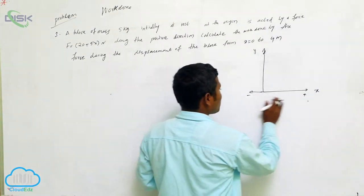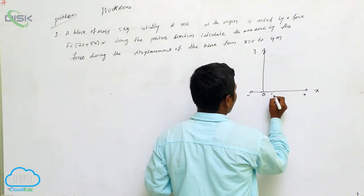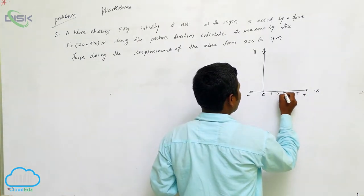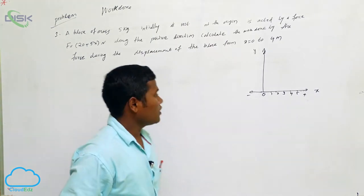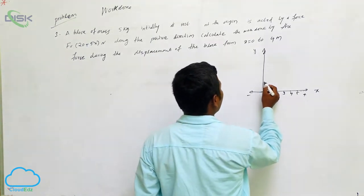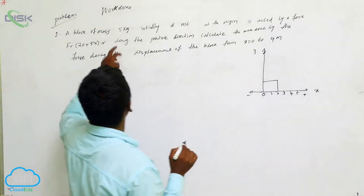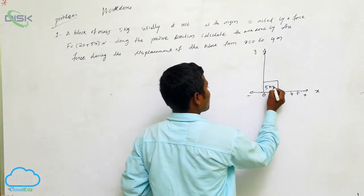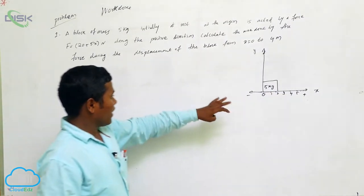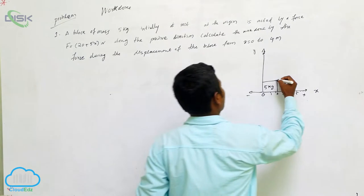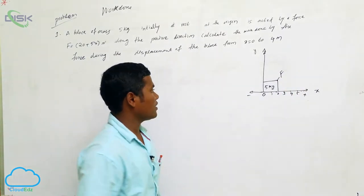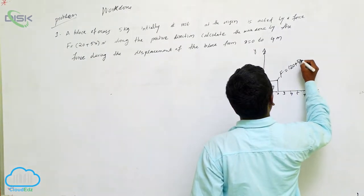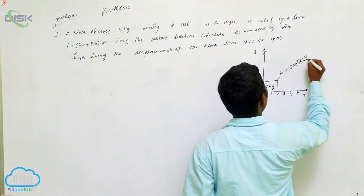On the x-axis, the points are 0, 1, 2, 3, 4, 5, and so on. The block is placed here. The mass of the block is 5 kg. On this 5 kg block, how much force is being applied? From the problem, the force is given as F = 20 + 5x.